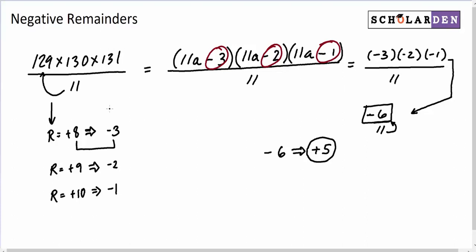So when the positive remainders are big, like this, negative remainders can save you some long calculations by helping you to use lower numbers. All right. I'll see you in the next video.